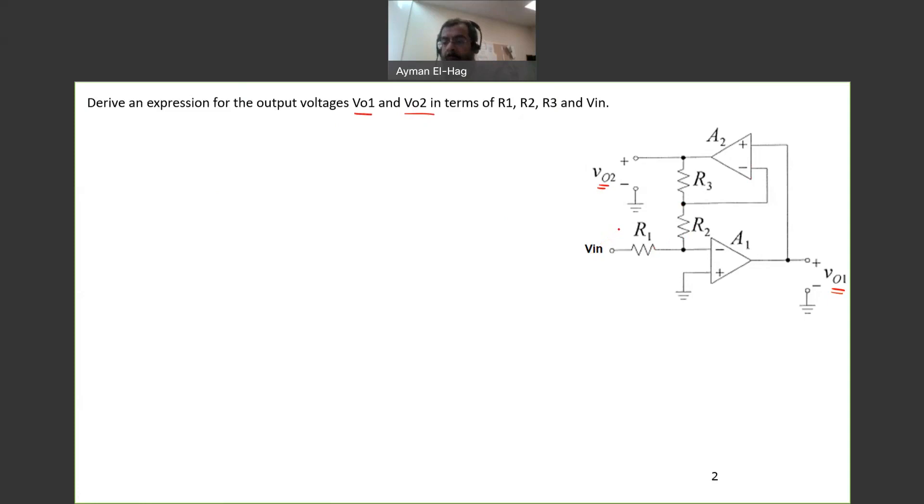So it's a typical question. Now, let's first try to assign the nodes for each node in the circuit. So we need to find either a value or a variable. Let's start from A1, op-amp 1. So this is 0 volt, so this will be also 0 volt.